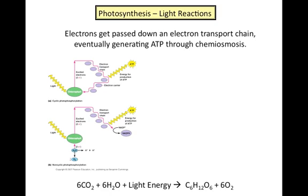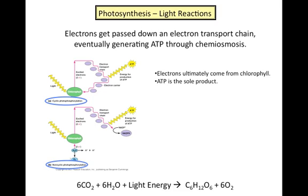There are two different types of light reactions: cyclic photophosphorylation and non-cyclic photophosphorylation. In cyclic photophosphorylation, sunlight provides the energy to excite some electrons from chlorophyll, which flow down the electron transport chain. These electrons eventually return to the chlorophyll to be re-excited by more sunlight. ATP is the only product in cyclic photophosphorylation.